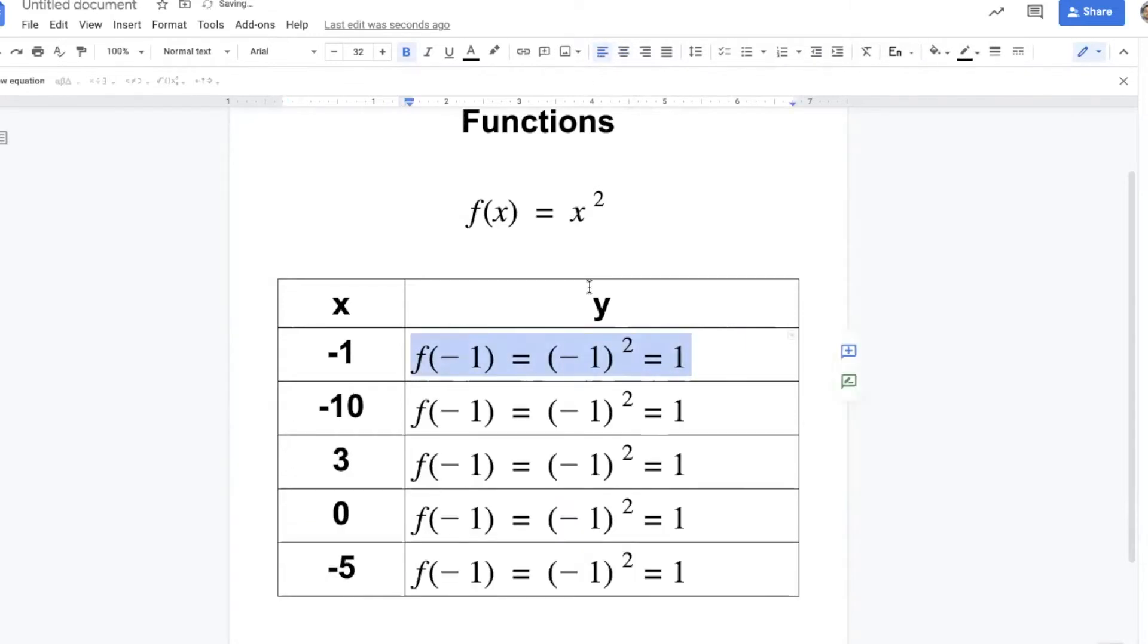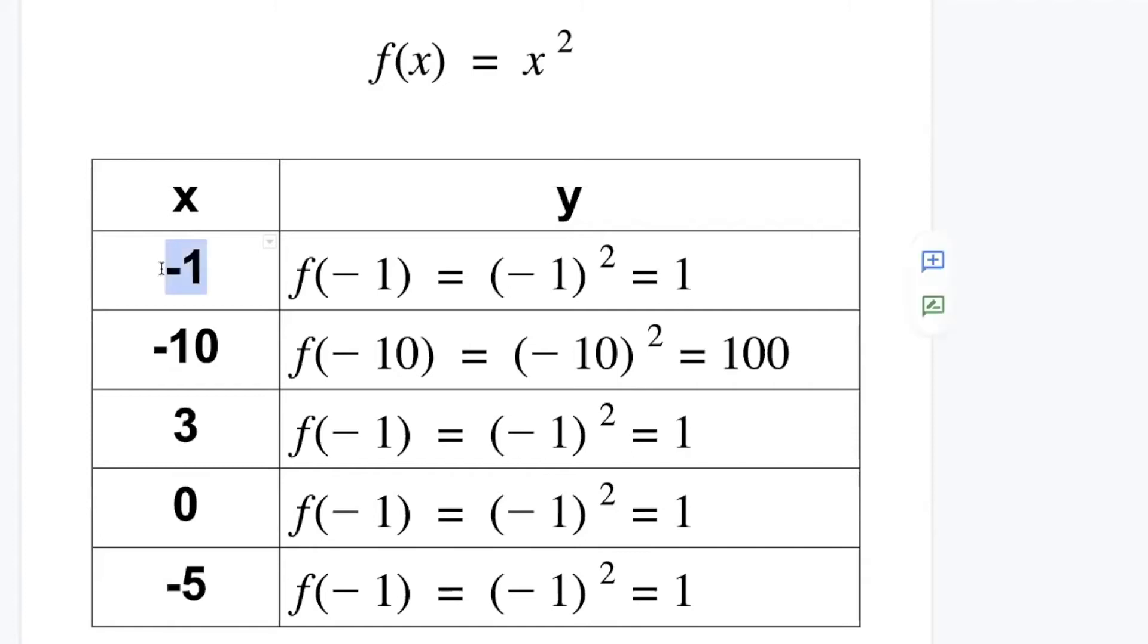Now what about negative 10, 3, 0, and negative 5? f when x is negative 10, what should I do here? Replace x with negative 10, which gives 100.